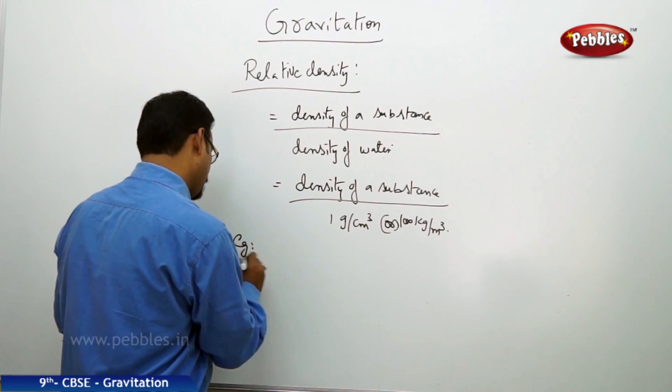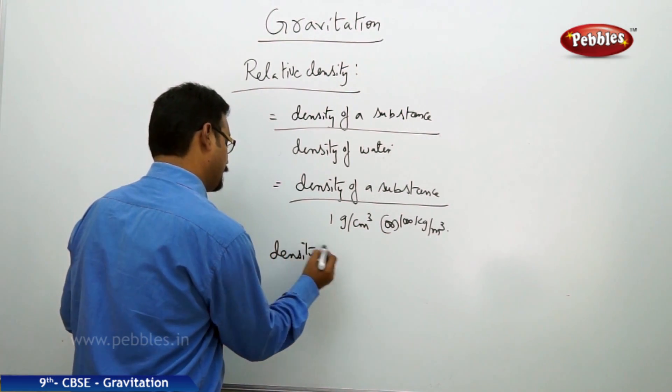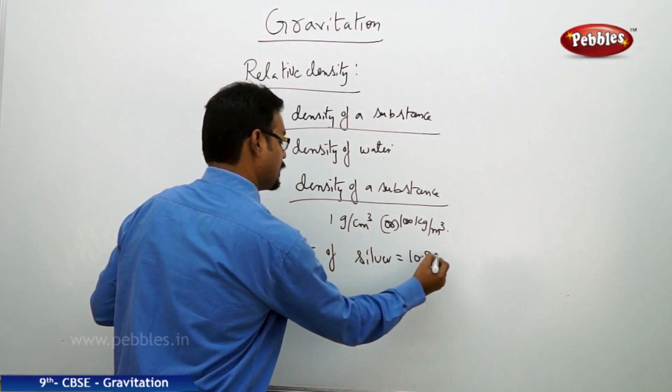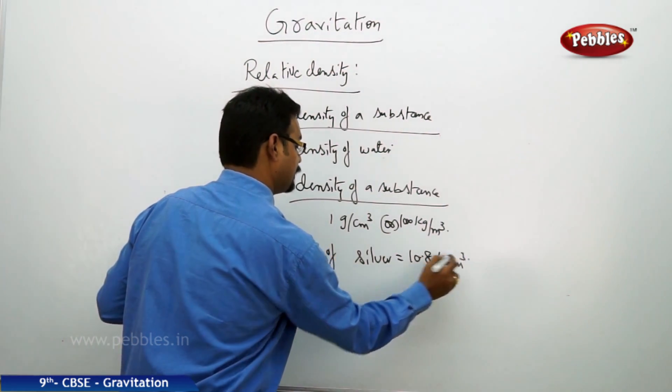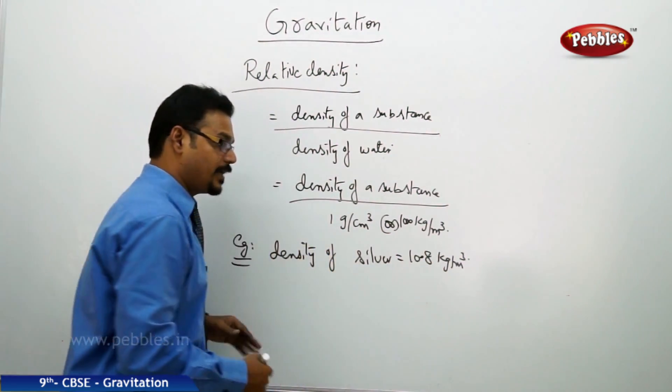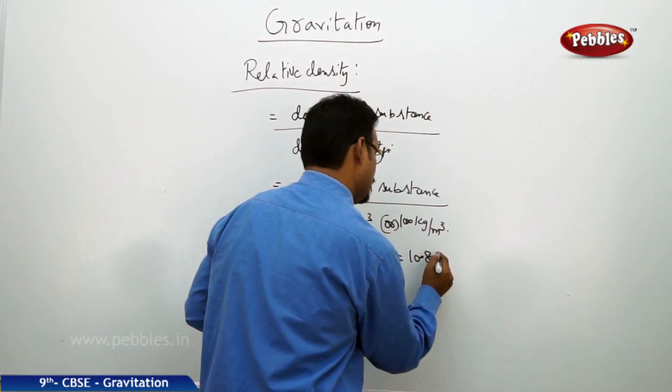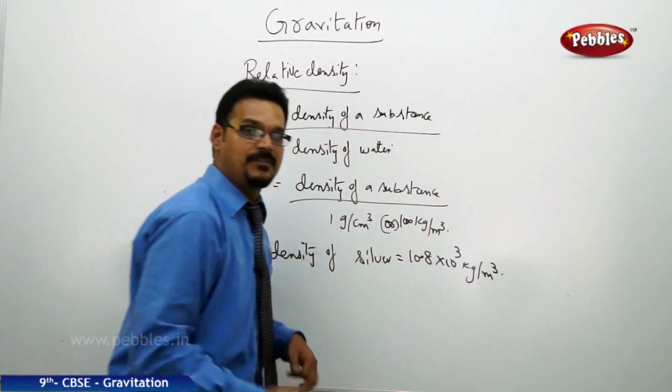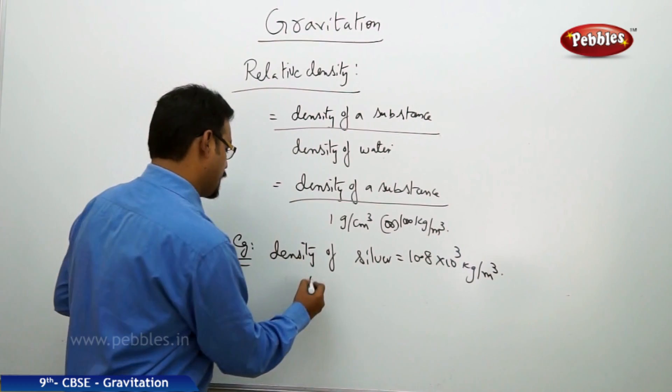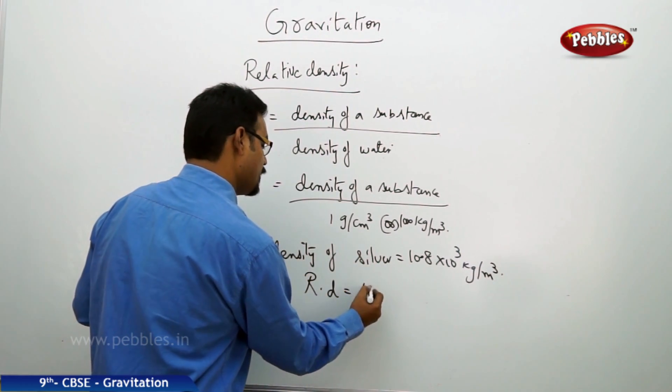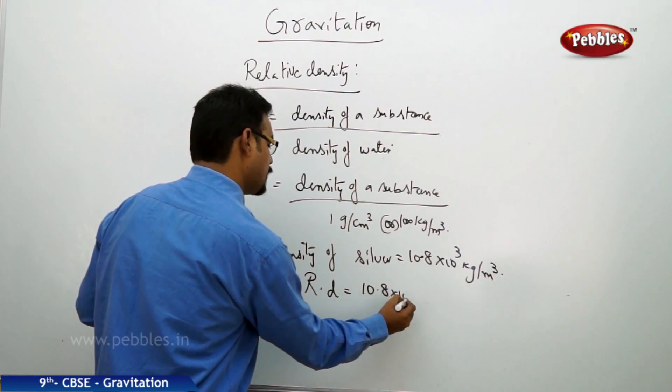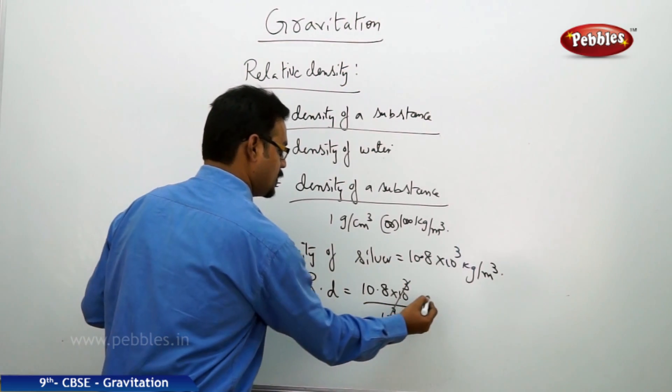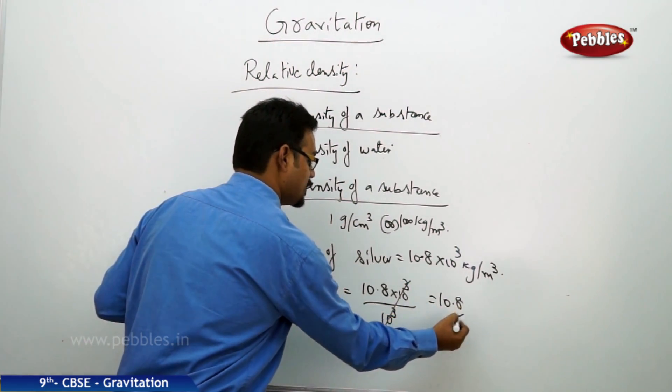For example, density of silver is 10.8 × 10³ kg per meter cube. If I ask you what is the relative density, so relative density Rd = density of silver which is 10.8 × 10³ by density of water which is 10³ because 1000. So both are cancelled. You got 10.8 is the relative density of silver.